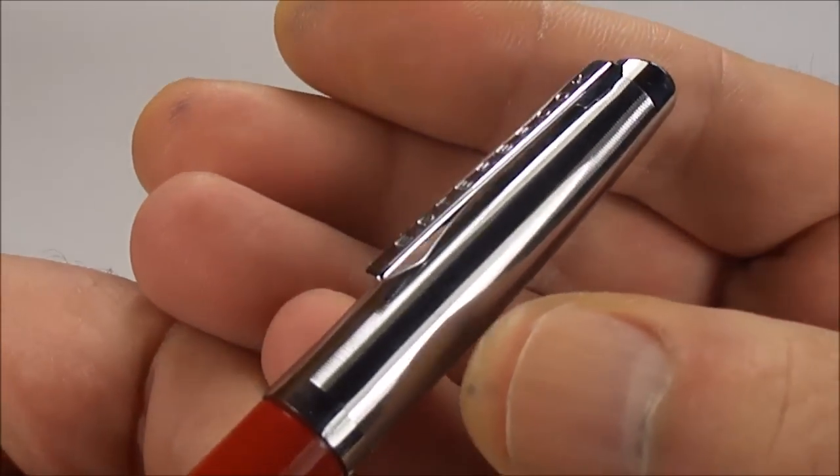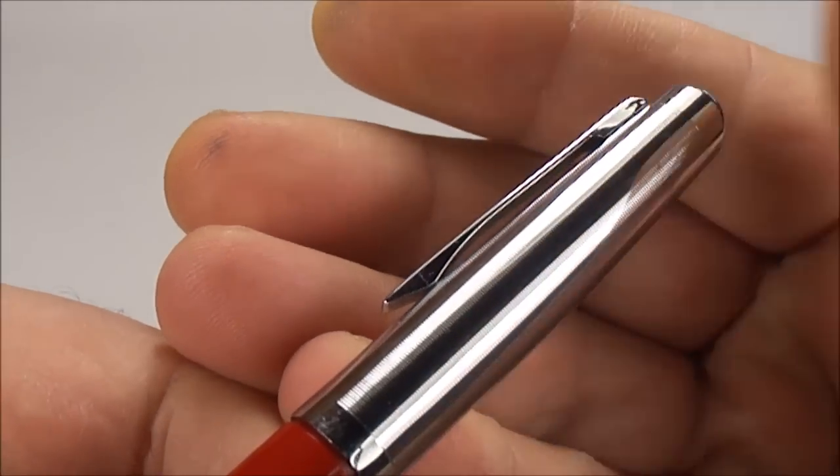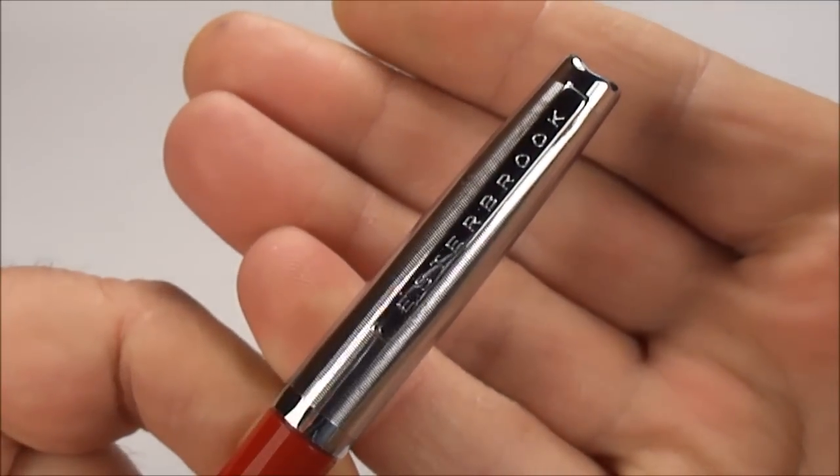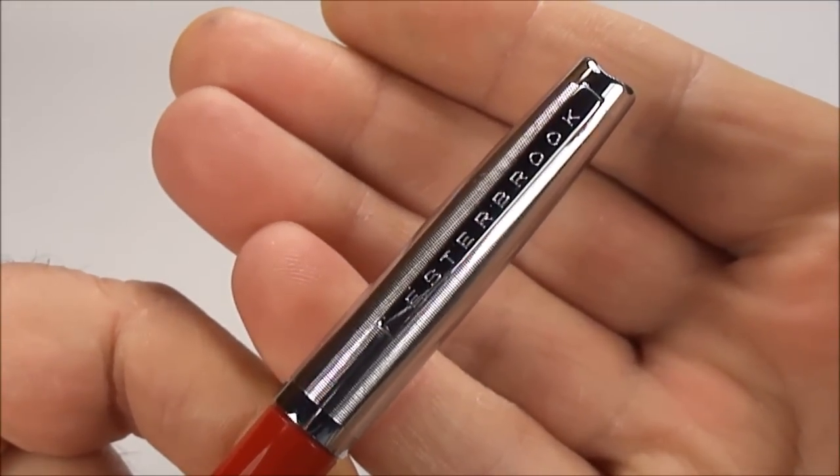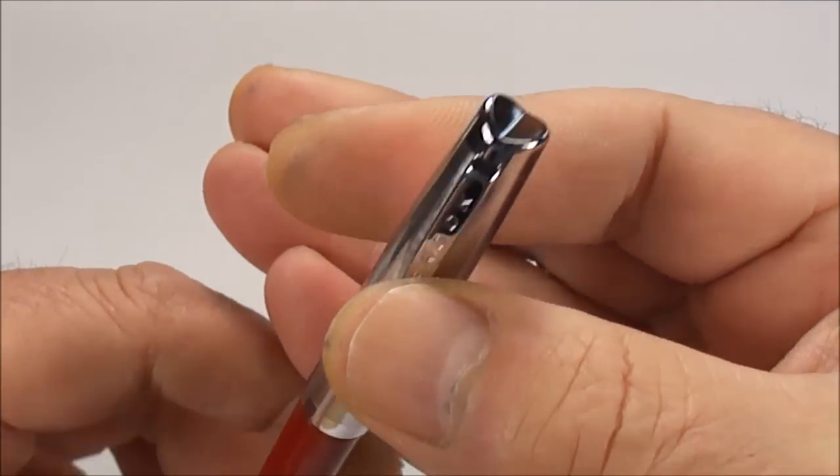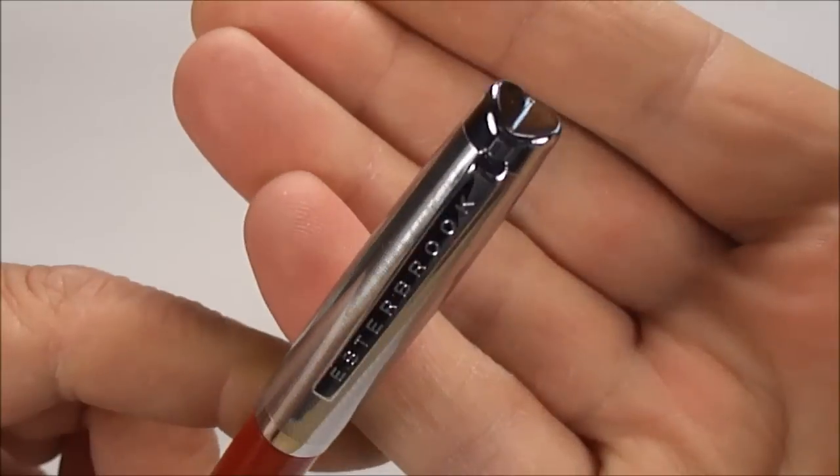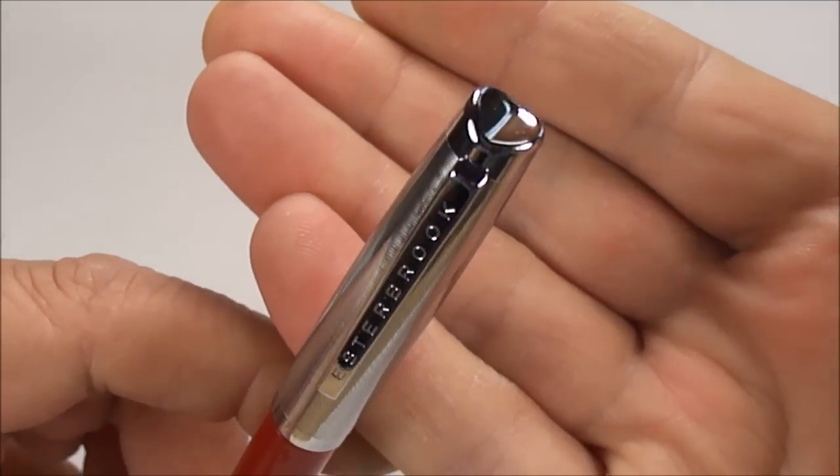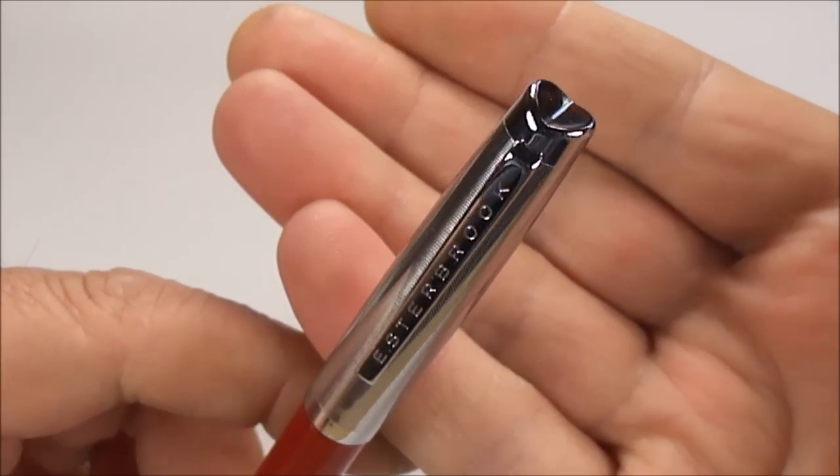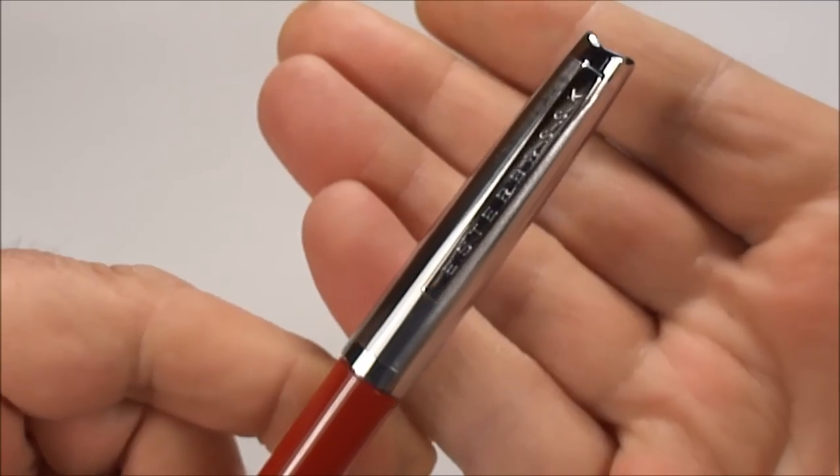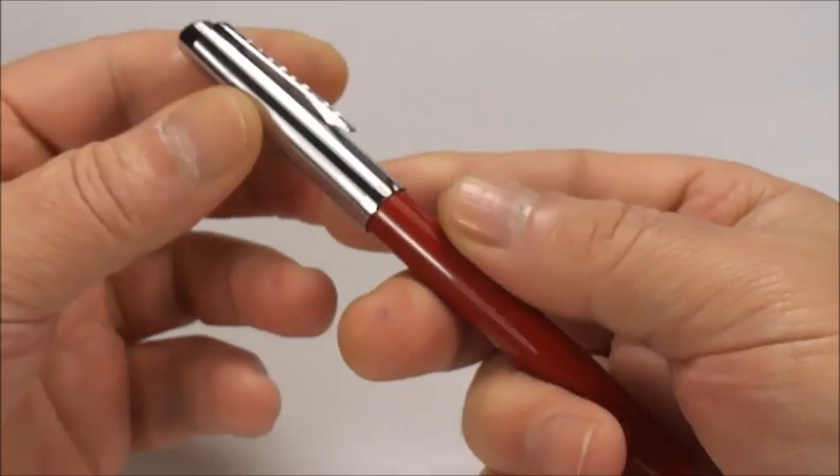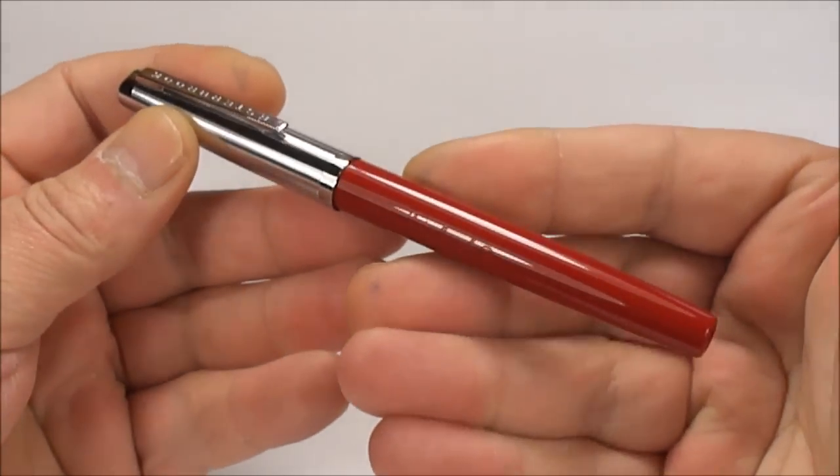If we bring it a little bit closer, I'm hoping you can see it's got this engine turn pattern to the cap there. If we show you the clip to the top, you can see it's got the word Esterbrook written on the clip. Now these pens are very recognizable—you can see to the top there it's got this sort of slight indent to the top of the cap. So that's how you can actually recognize this specific model.